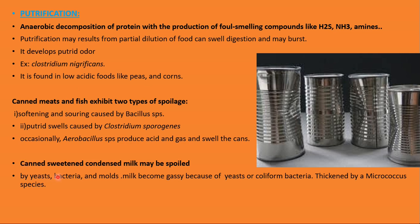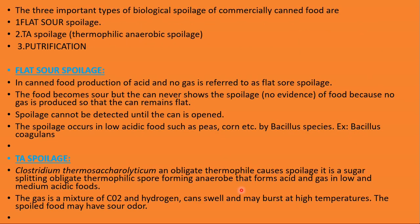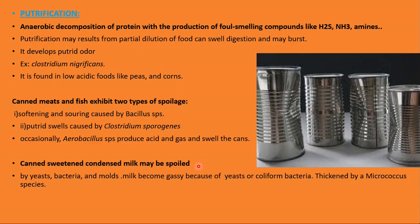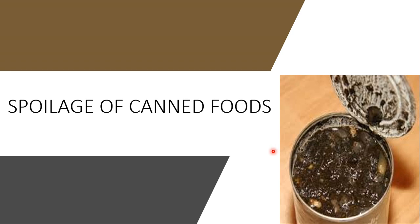Canned sweetened condensed milk may be spoiled by yeast, bacteria, and molds. Milk may become gassy because of yeast or coliform bacteria. It may become thickened due to Micrococcus species, and it may develop buttons consisting of small masses of mold mycelium. This concludes the spoilage of canned foods, completing the full topic of food spoilage in common commodities.